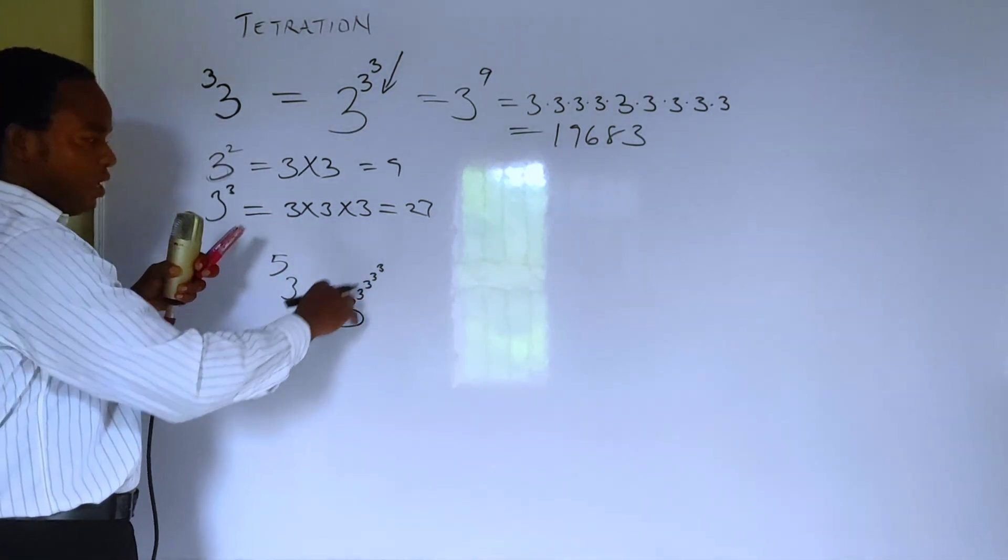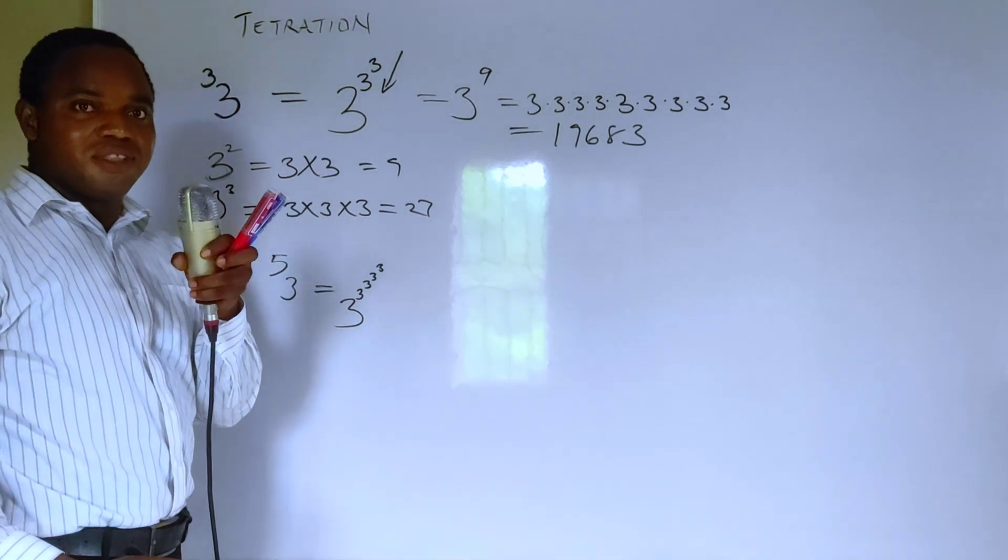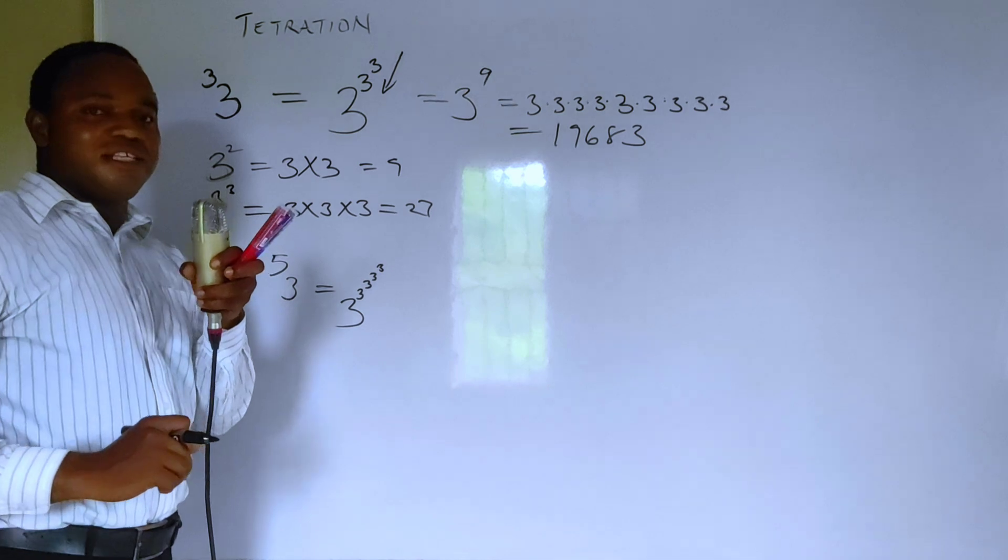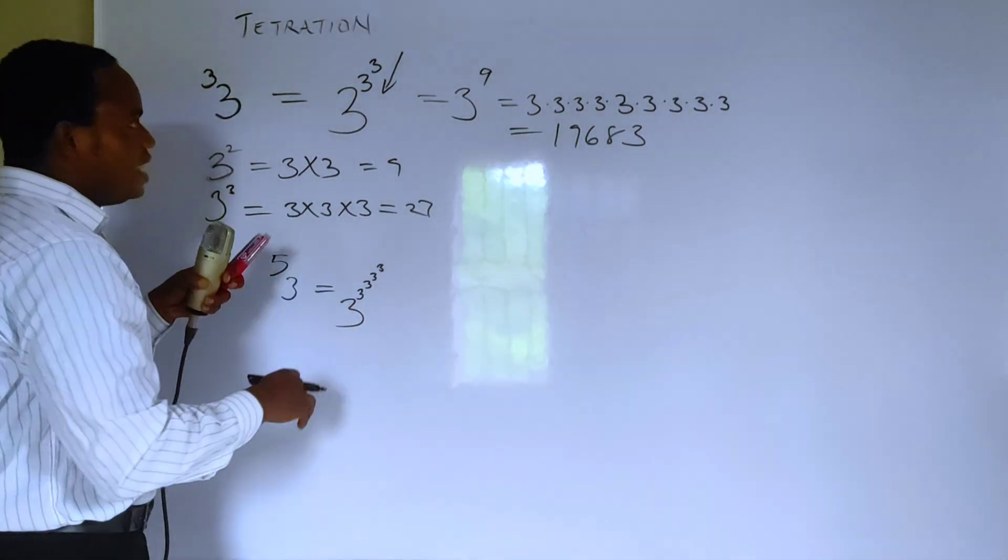So this number gets so big that it can be rather difficult to compute. The number gets so big that sometimes you cannot even write it down, and this is the reason why tetration doesn't get used a lot in mathematics.